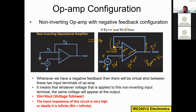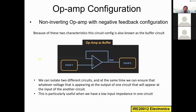The non-inverting operational amplifier with negative feedback configuration is also known as a buffer circuit because of these two characteristics. When placed between two circuits, it takes the output of circuit one as its input. For example, if circuit one gives 5 volts, that same 5 volts appears at the output of the voltage follower, and this 5 volts is then applied to circuit two as input.